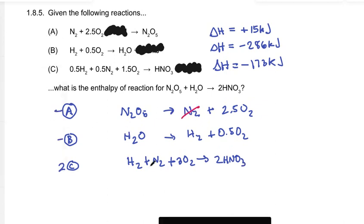So nitrogen cancels, hydrogen cancels. We have three oxygen on the left and 2.5 plus 0.5 is three oxygens on the right, that's all very neat. So N2O5 plus H2O makes 2 HNO3, that worked beautifully like we always hope it will.